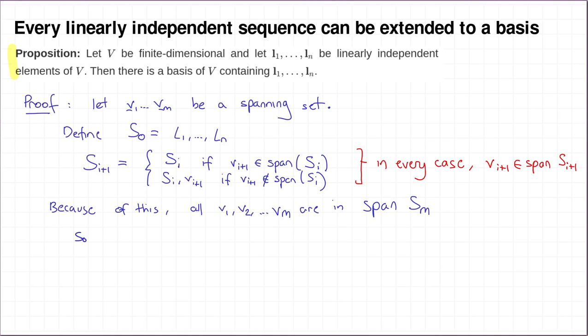But the Vis formed a spanning set. So actually, span SM is V. The span of SM is a subspace. Subspaces are closed under taking linear combinations, but every vector in V is a linear combination of V1 up to Vm, because we're assuming that V1 up to Vm is a spanning set. So the span of SM contains every vector in V, and therefore the span of SM equals V.